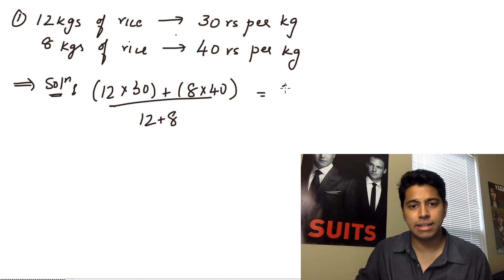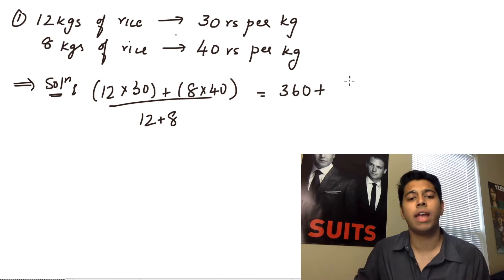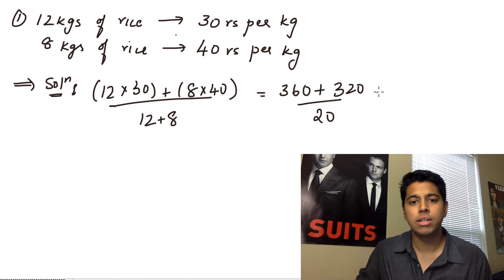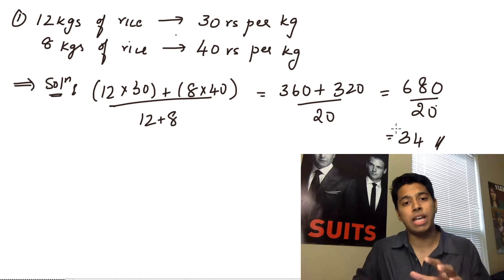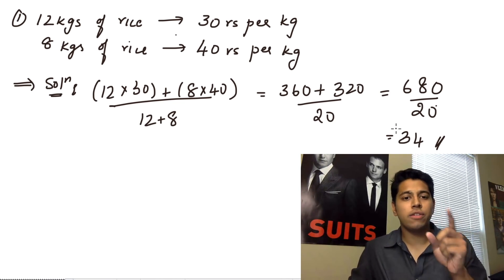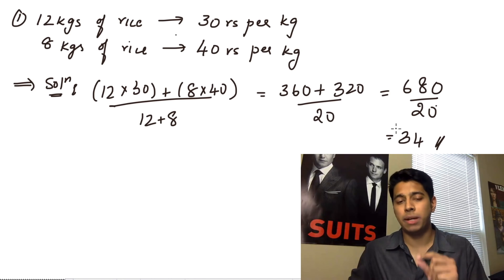So now you have 12 into 30, that's 360. You have 8 into 40, that's 320. And you have 12 plus 8 is 20. So now this is going to be 680 by 20, so this is 34. So this is 34 rupees per kg. Now you saw that 12 kgs of rice is 30 rupees per kg, and 8 kgs of rice is 40 rupees per kg. After you mix both of them up, it comes to 34 rupees per kg.